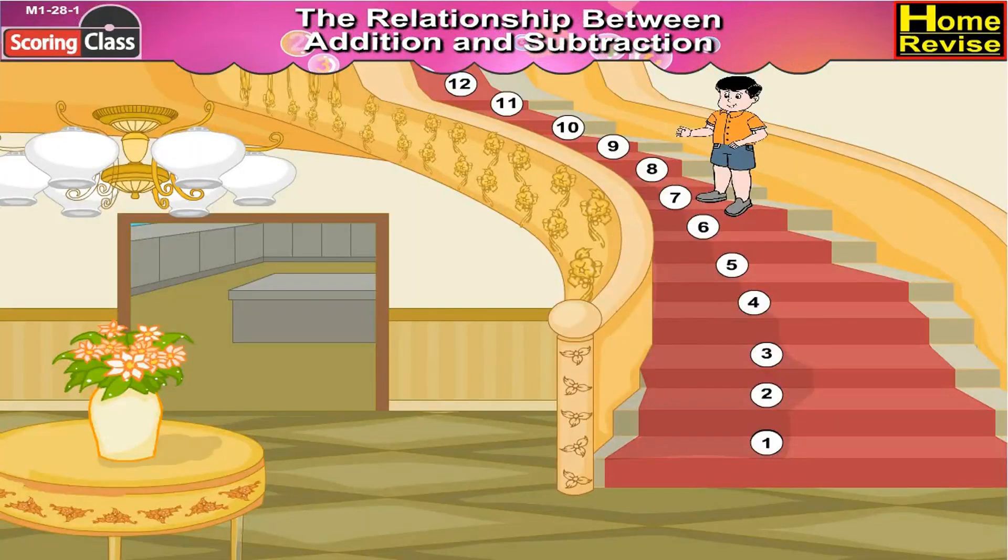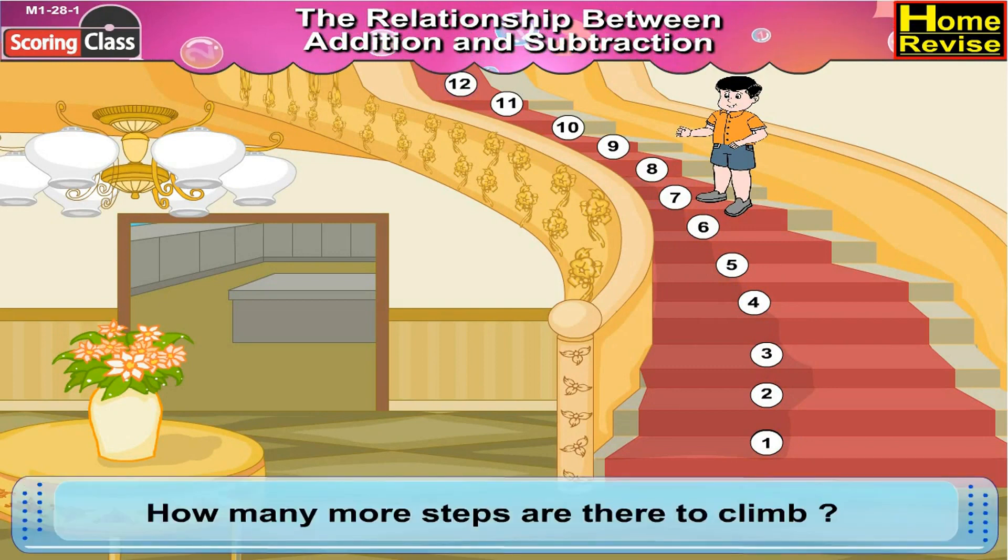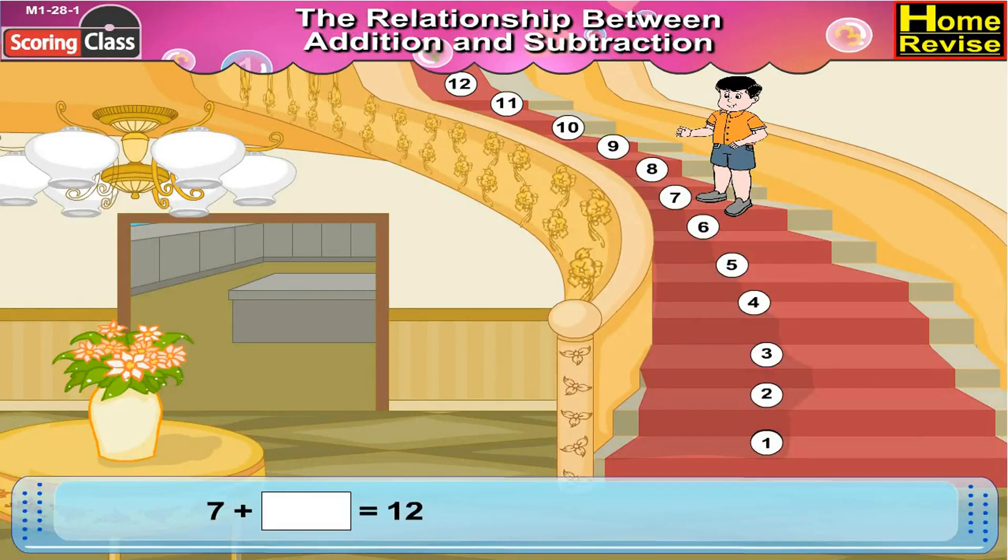Now if you notice the first picture, Bittu is at step number 7. He wants to reach step number 12. How many more steps are there to climb? Now 7 plus how many is equal to 12? You are right. 7 plus 5 is equal to 12.